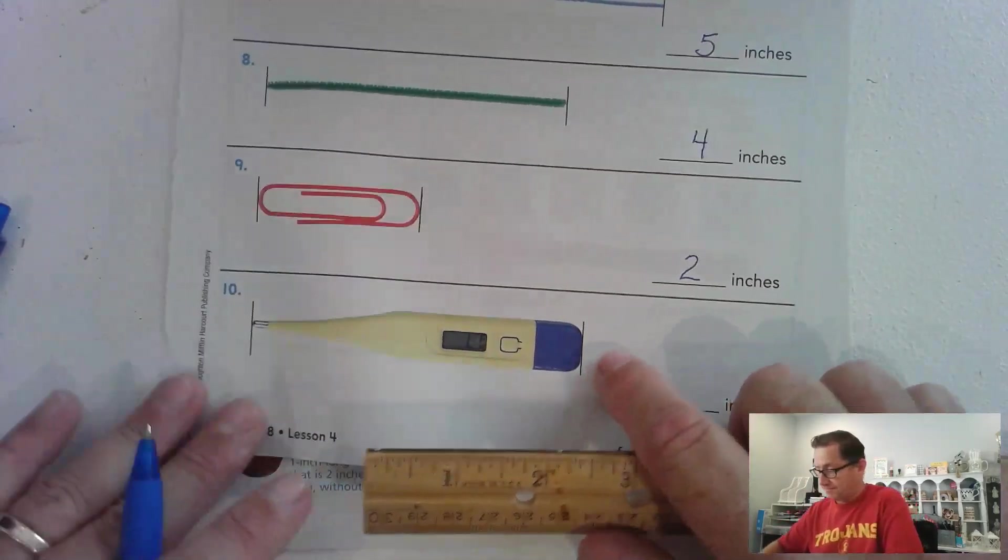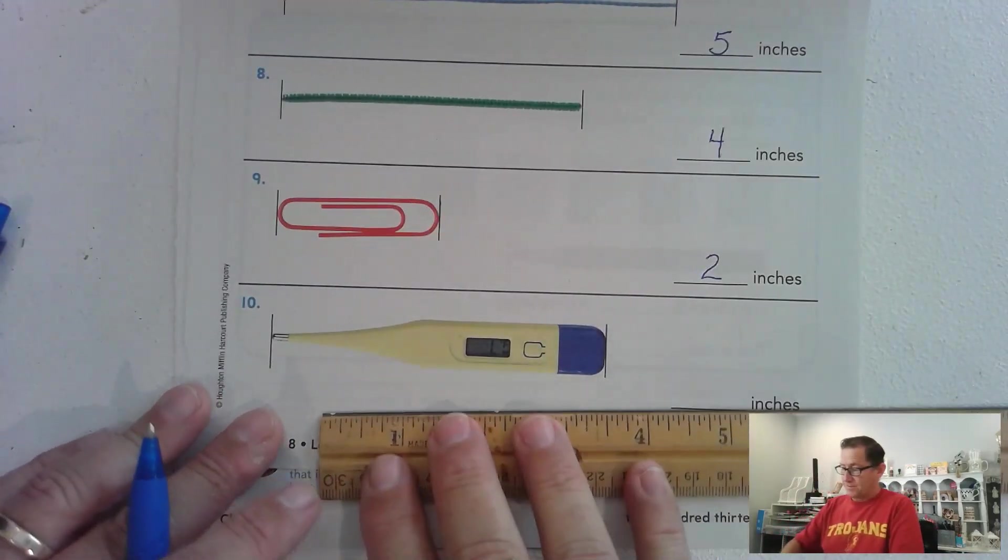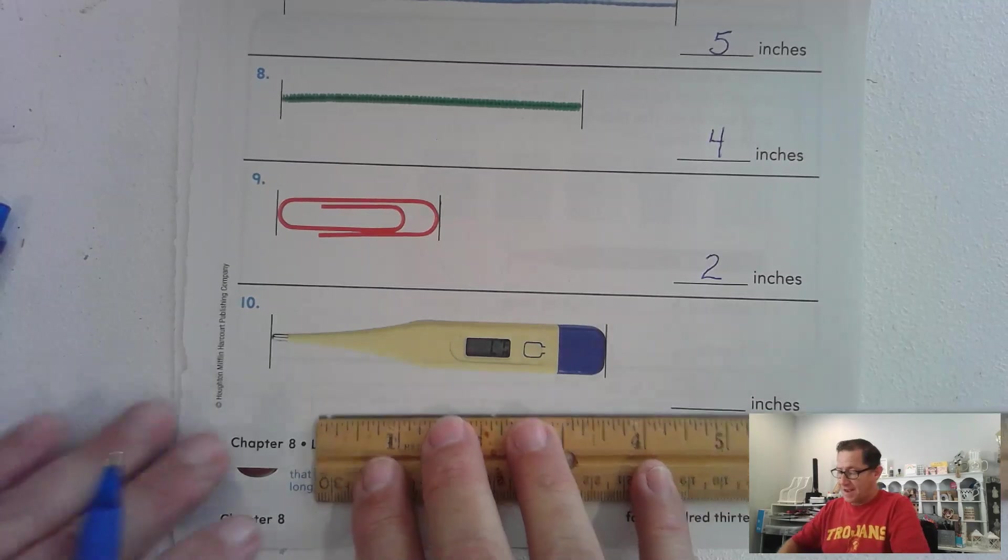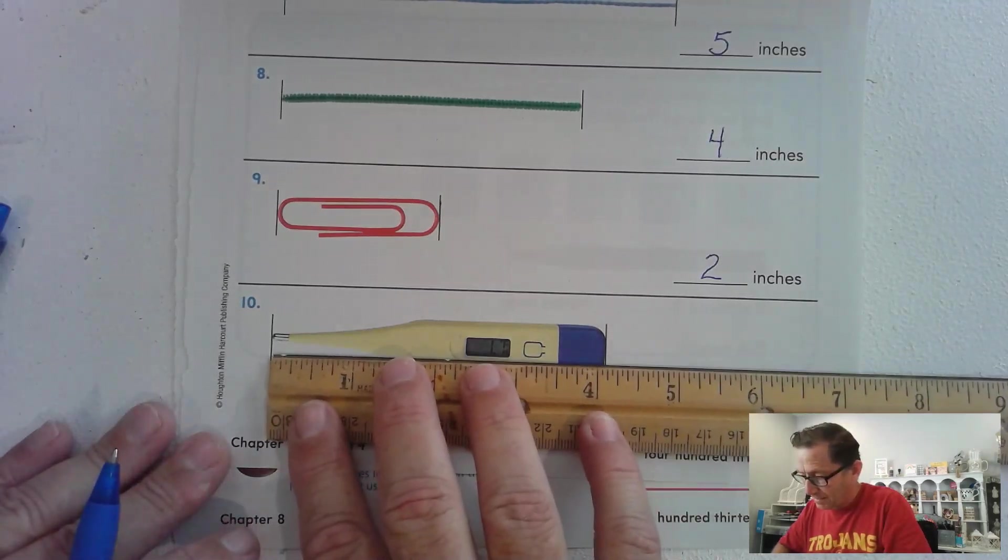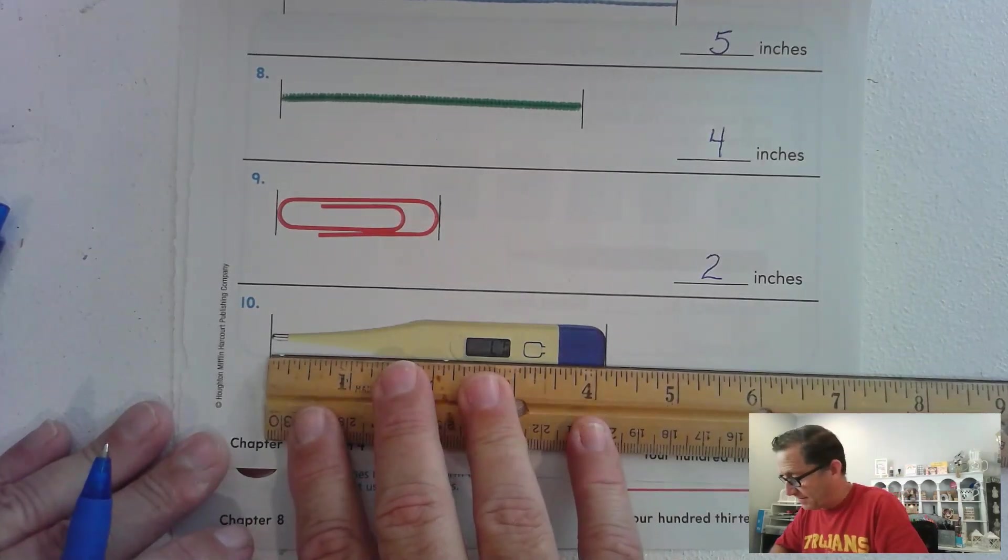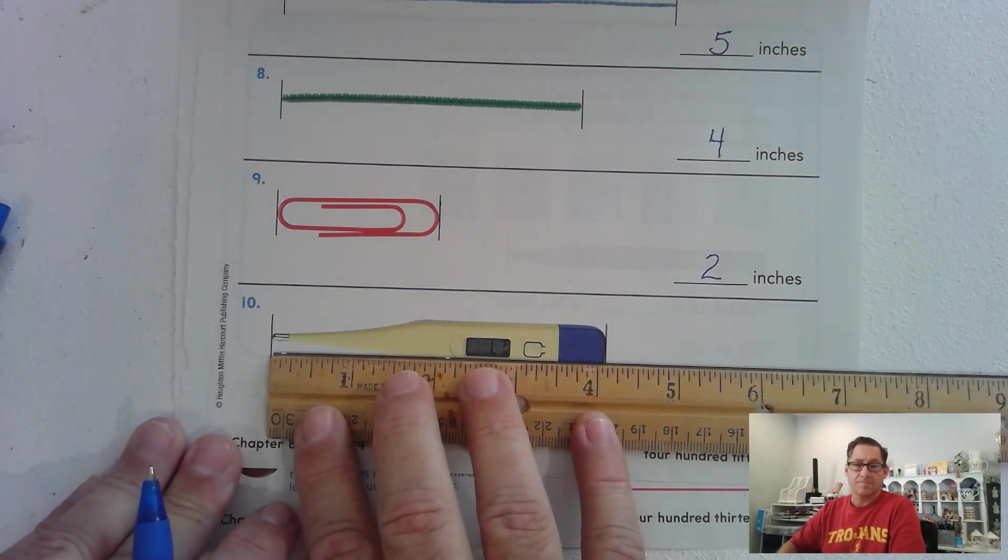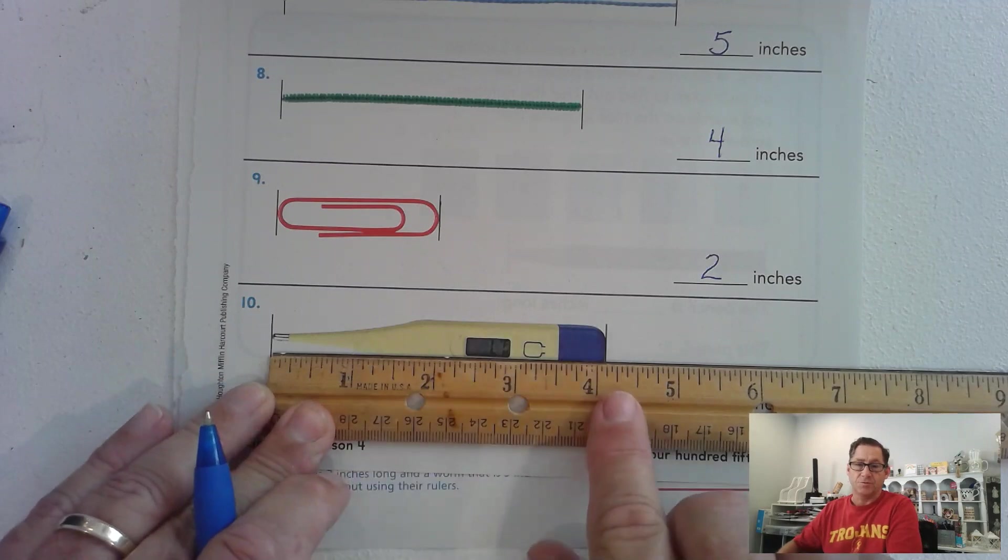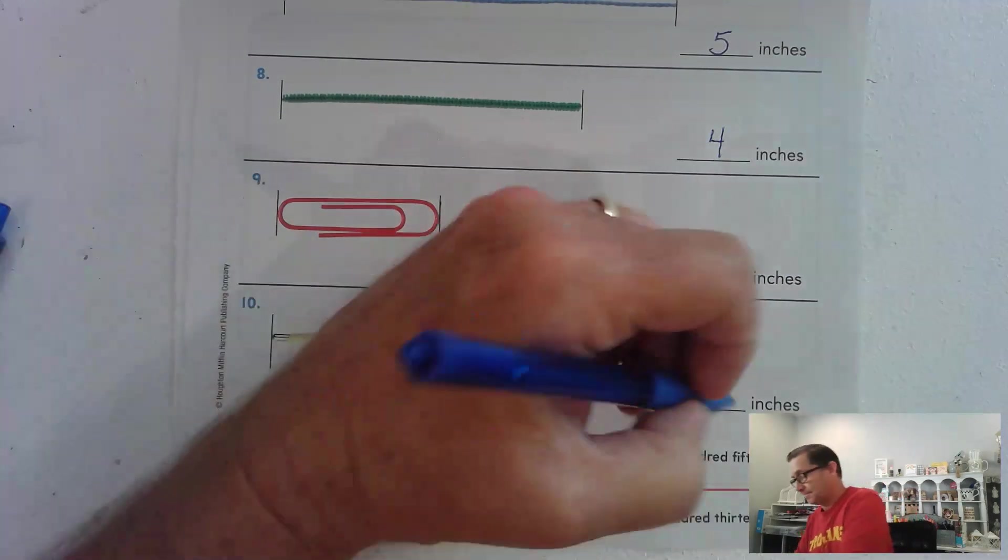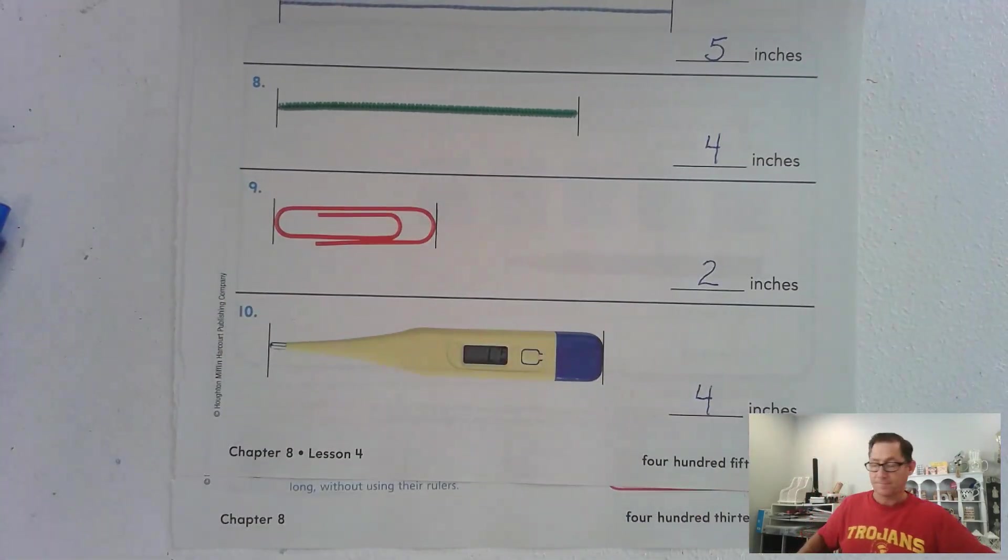How about this one? I'm going to say that this one is a little past four, less than five. So it's in between four and five. And it's closer to four.